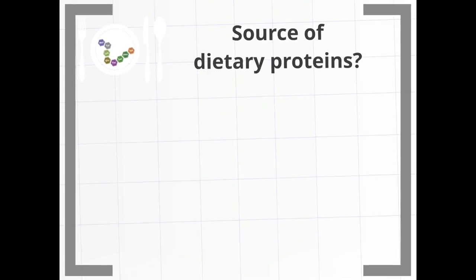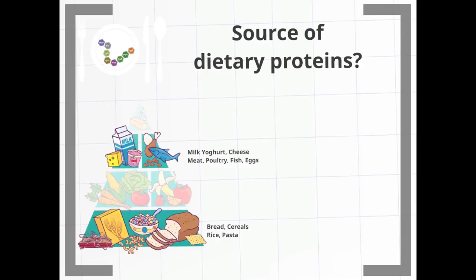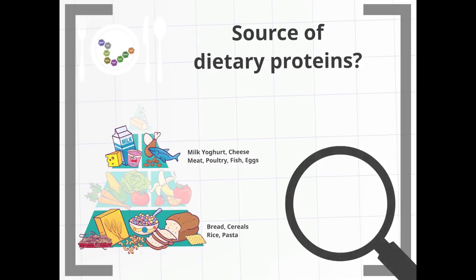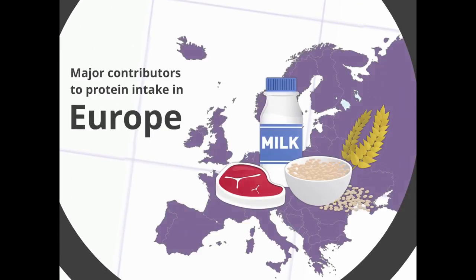Where do we find dietary protein? The main sources of protein in Europe are meats, cereals, dairy products, milk, yogurts, cheese, fish and eggs and legumes.